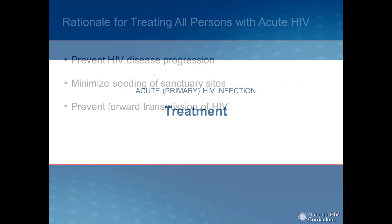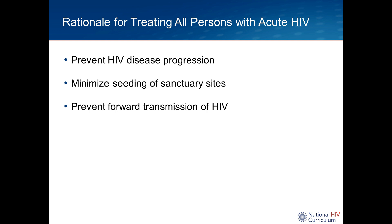There is a very strong rationale to treat all persons with acute HIV. First, you want to prevent disease progression — jumping in very early is the single biggest thing you can do to minimize lymphoid damage, especially gut-associated lymphoid tissue damage. Second, you will minimize the seeding of sanctuary sites throughout the body. Although that may not seem relevant now, if pharmacological mechanisms to cure HIV become available years from now, the degree of viral infection in sanctuary sites may predict who could be cured with pharmacological therapy.